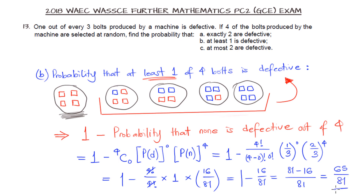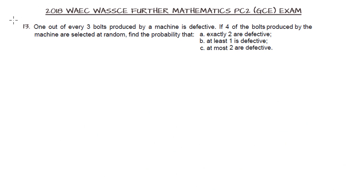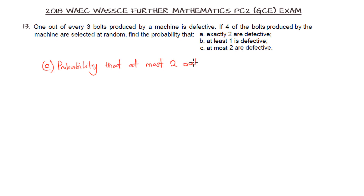Using 1 minus the probability that none is defective helps us solve this efficiently, rather than evaluating each individual case. For part C, we are told to find the probability that at most 2 of the 4 boats selected are defective. Let's draw out all scenarios in which at most 2 of the boats are defective.